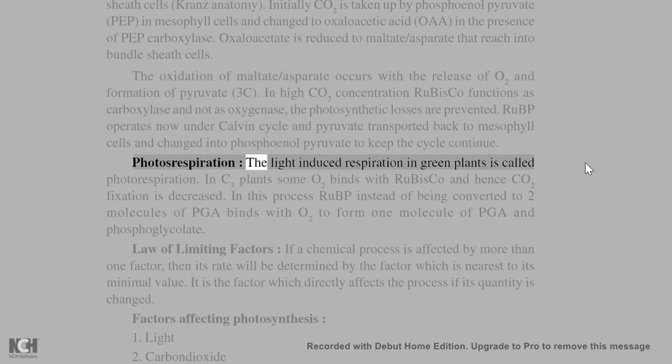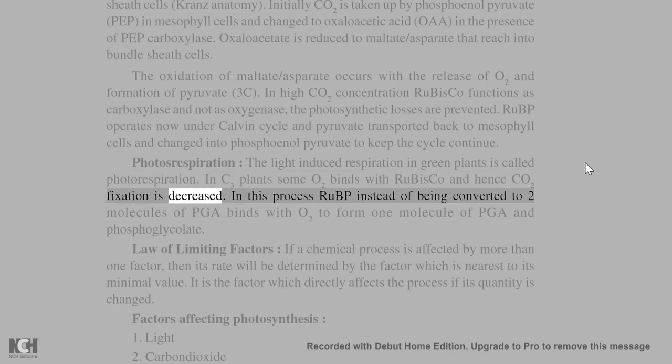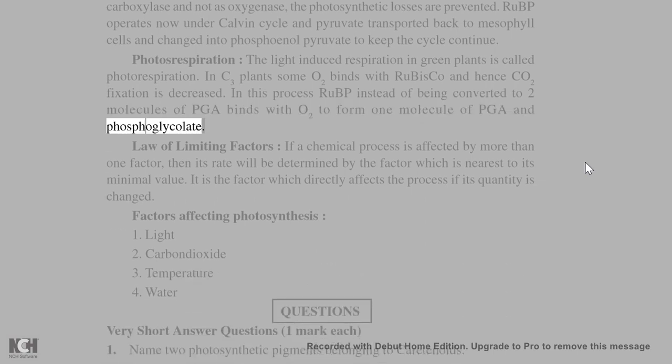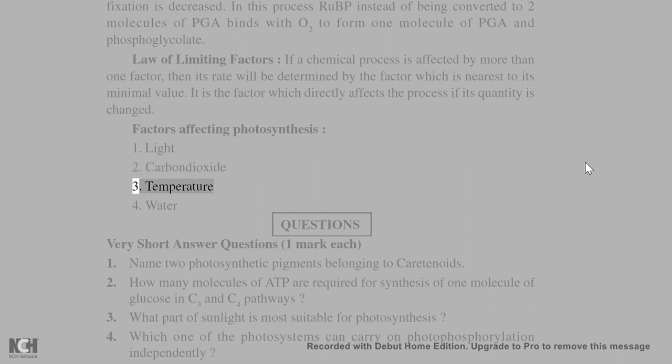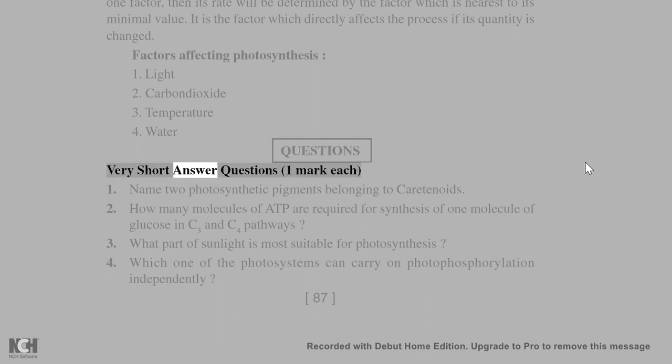Photorespiration: The light-induced respiration in green plants is called photorespiration. In C3 plants some O₂ binds with RuBisCO and hence CO₂ fixation is decreased. In this process RuBP instead of being converted to two molecules of PGA binds with O₂ to form one molecule of PGA and phosphoglycolate. Law of Limiting Factors: If a chemical process is affected by more than one factor, then its rate will be determined by the factor which is nearest to its minimal value. Factors affecting photosynthesis: 1. Light, 2. Carbon dioxide, 3. Temperature, 4. Water.